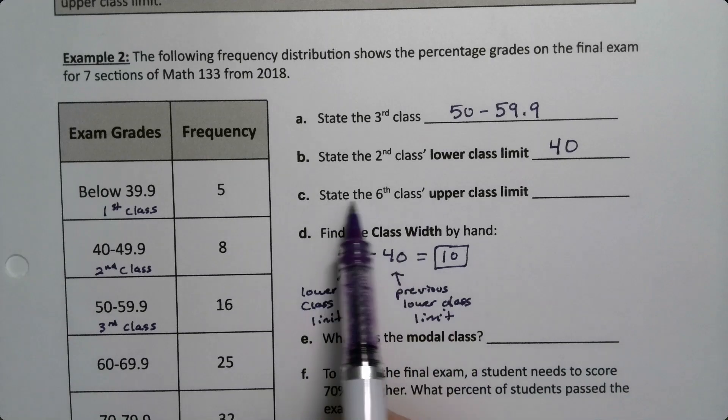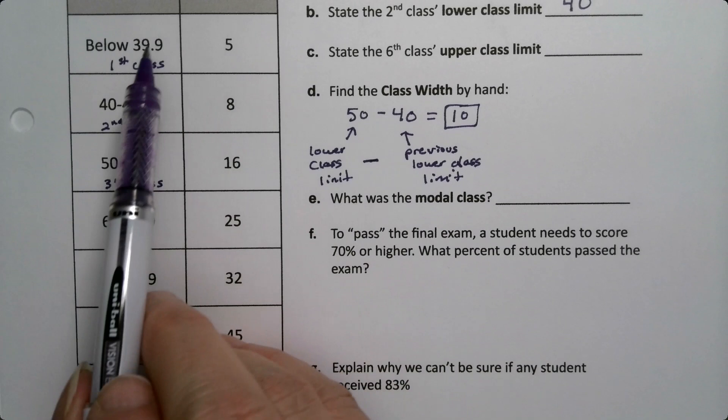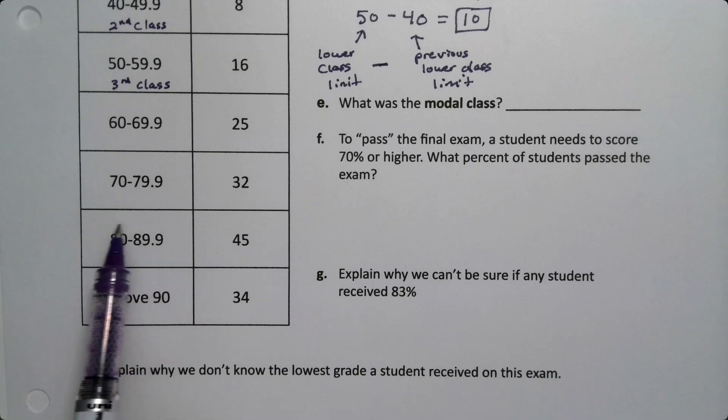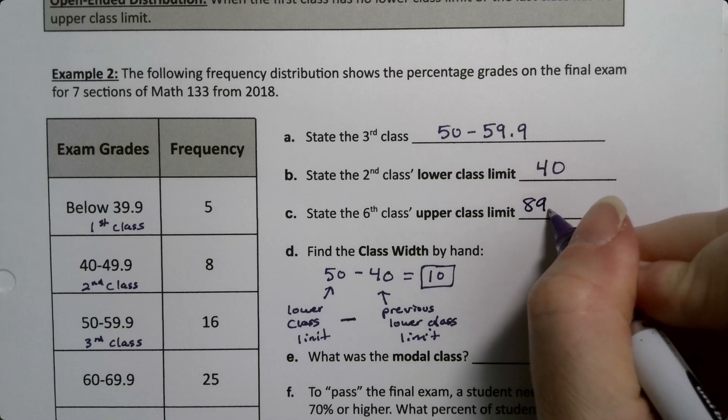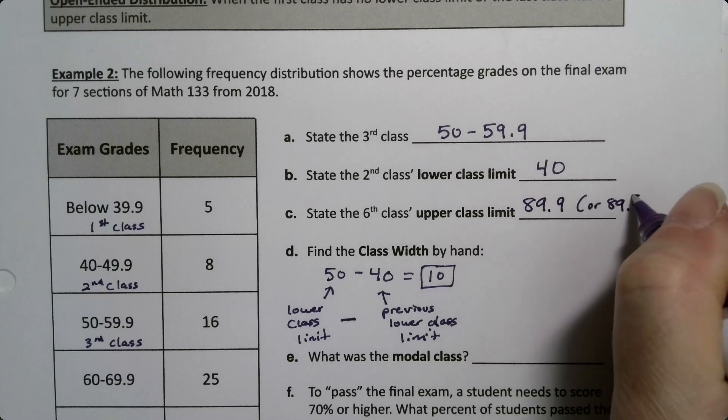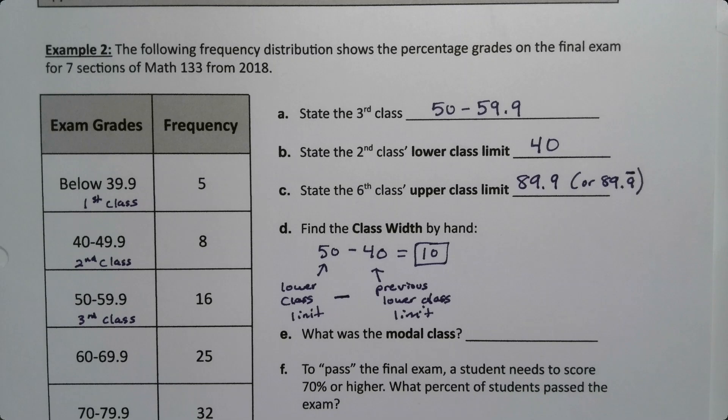What about the sixth class's upper class limit? If I'm going down first, second, third, fourth, fifth, sixth. The sixth class is right here. The upper class limit is 89.9, as listed there. So 89.9, or you could write 89.9 with a repeating bar. Because it's really everything up to 90, but not including 90 because 90 is the start of the seventh class.